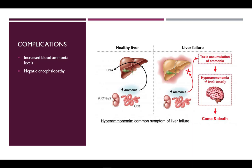When ammonia levels reach high amounts in the brain, hepatic encephalopathy occurs. Hepatic encephalopathy causes mental symptoms such as confusion, forgetfulness, agitation, and severe personality changes. A person with encephalopathy can slip into a coma, and 80% will die when this happens.